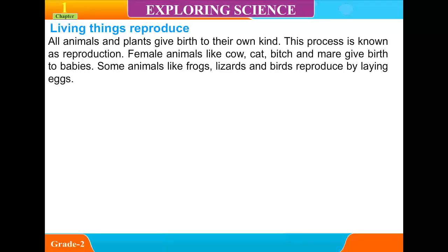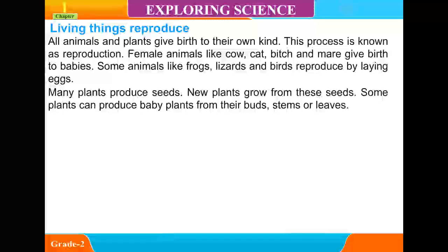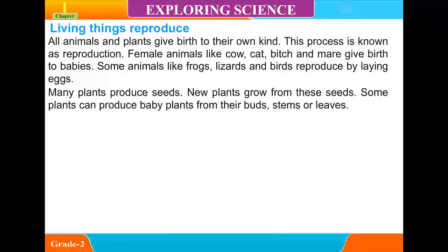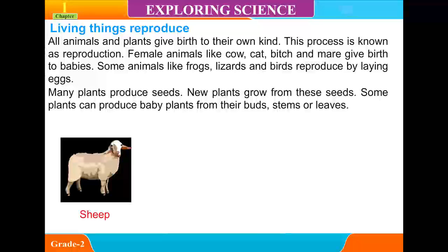Living things reproduce. All animals and plants give birth to their own kind. This process is known as reproduction. Female animals like cow, cat, bitch and mare give birth to babies. Some animals like frogs, lizards and birds reproduce by laying eggs. Many plants produce seeds, and new plants grow from these seeds. Some plants can produce baby plants from their buds, stems or leaves.